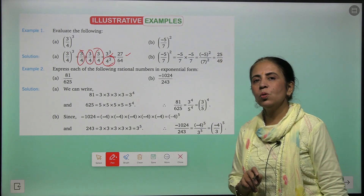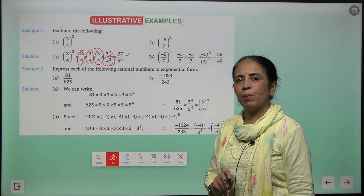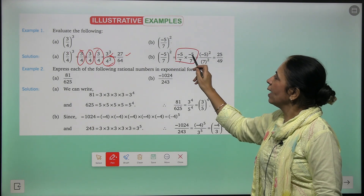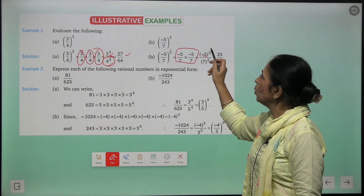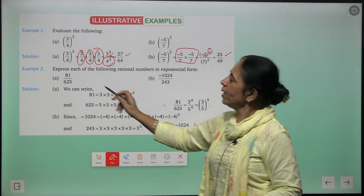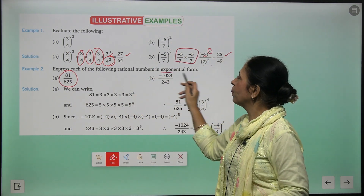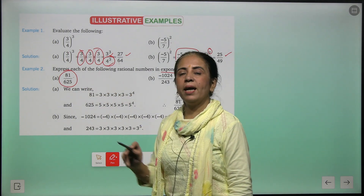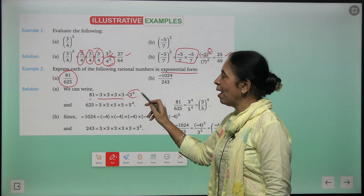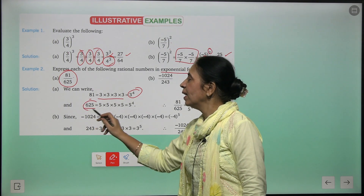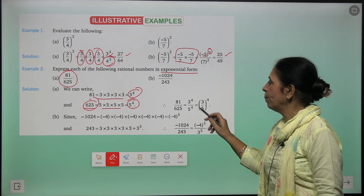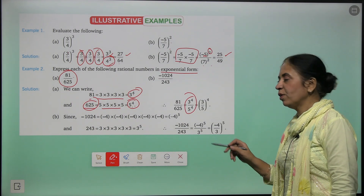Another example: (-5/7) raised to the power 2 means (-5) × (-5) = (-5)², and since the power is even, the result is positive — we get 25/49. Next, to express 81/625 in exponential form: 81 = 3 × 3 × 3 × 3 = 3⁴, and 625 = 5 × 5 × 5 × 5 = 5⁴, so we write it as 3⁴/5⁴ = (3/5) raised to the power 4.